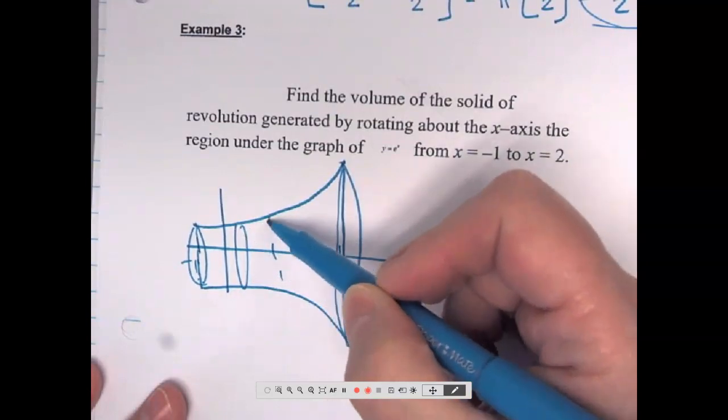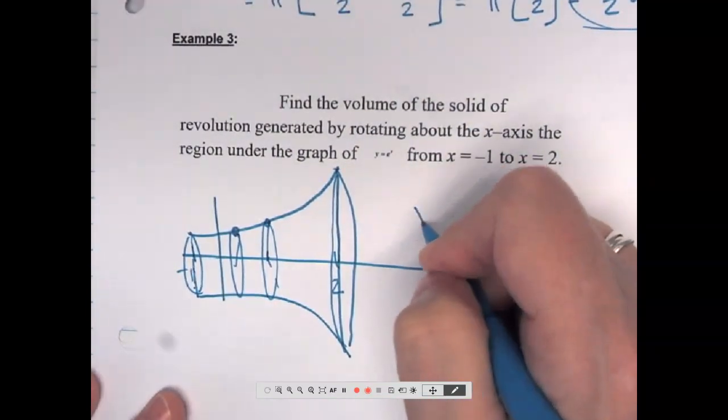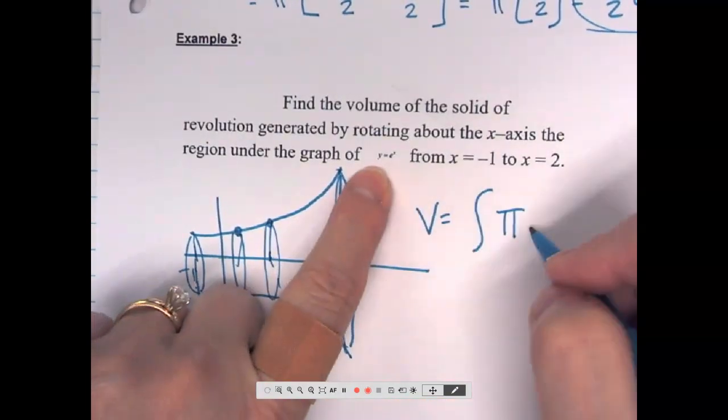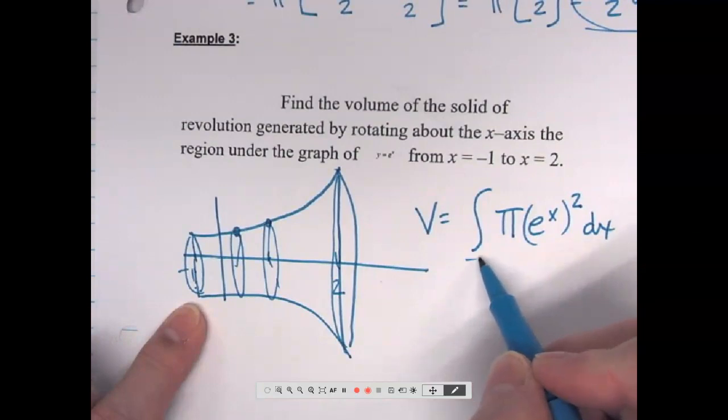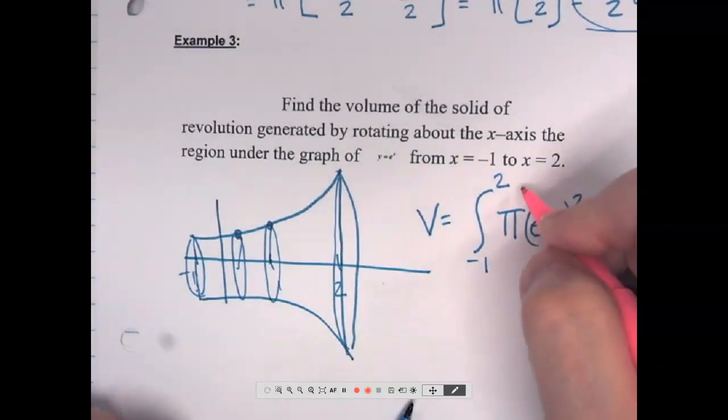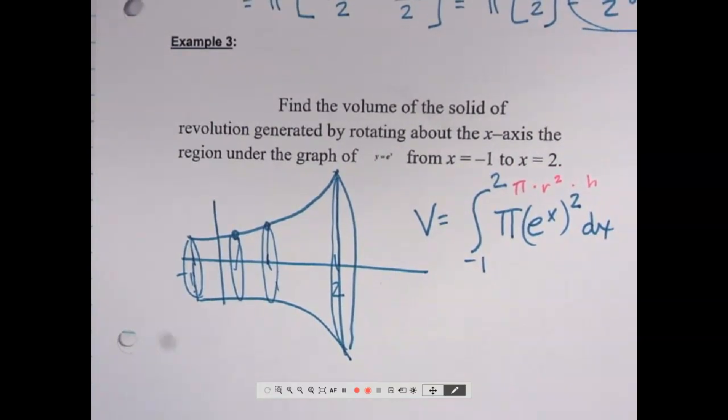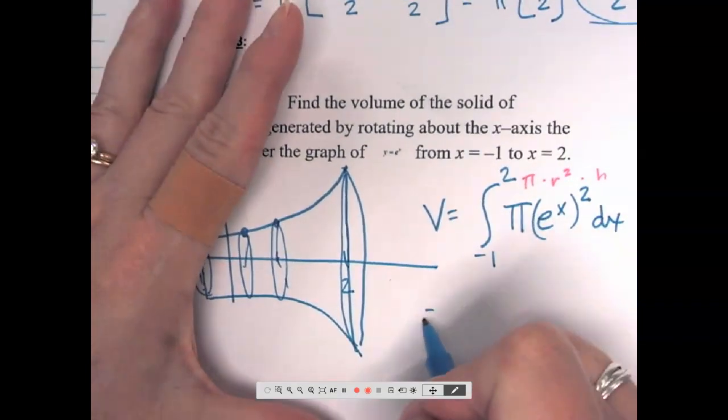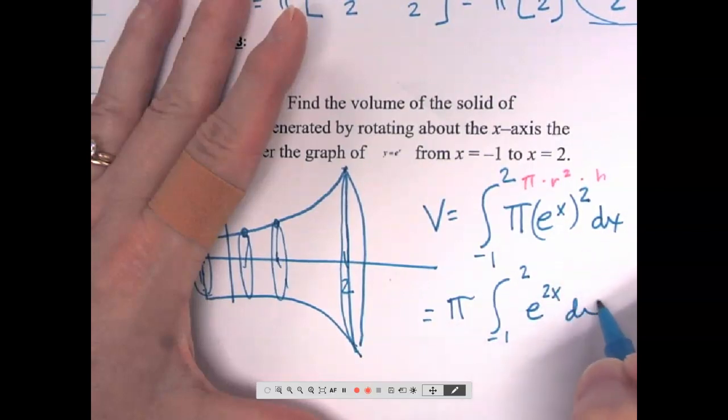So again, as I slice these little cylinders throughout, the radius changes and the radius is dependent on whatever that y-coordinate is on the function. So to find the volume, I will integrate pi r, well r is whatever the y value of that is, squared, times the height, and I'm going from negative 1 to 2. So here's your pi r squared height. What happens when I square e to the x? What does that become? e to the 2x, because the exponents get multiplied.